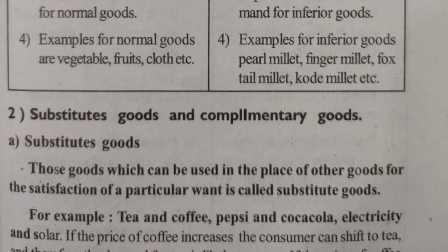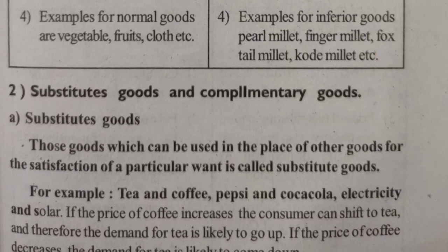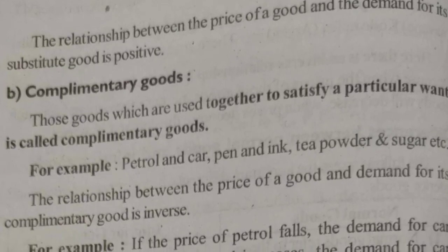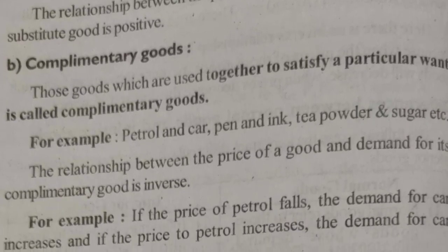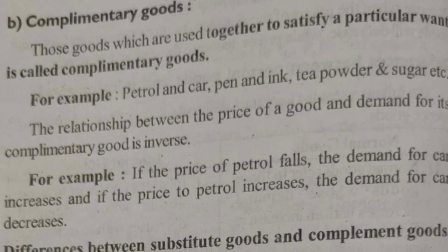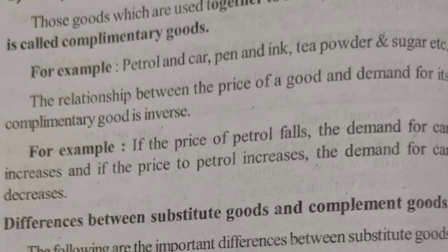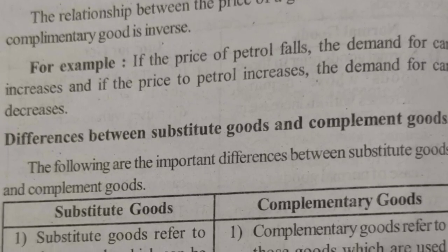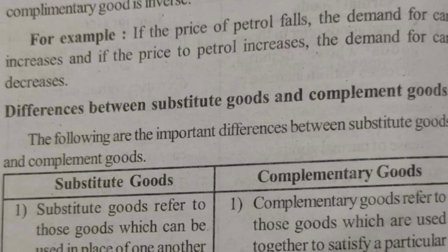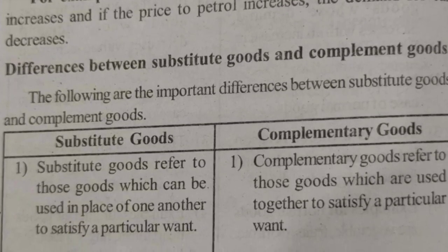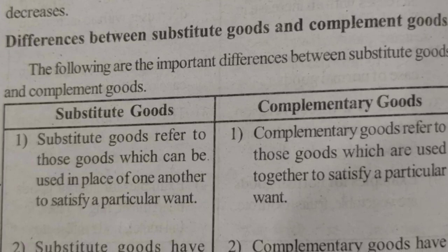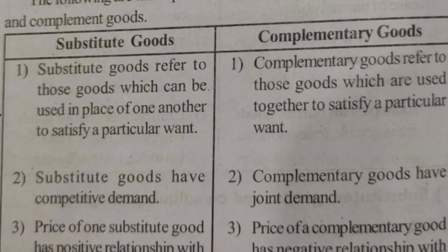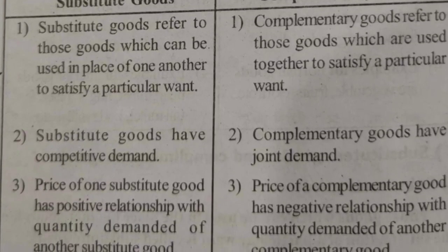Complementary goods are those goods which are used together to satisfy a particular want. For example, socks and shoes, belt and pants, shirt and tie, and pen and ink are all complementary goods. You may need to explain the difference between substitute and complementary goods for two or four marks in your exam.